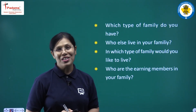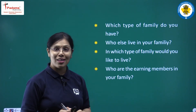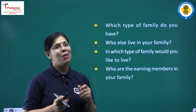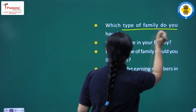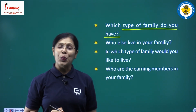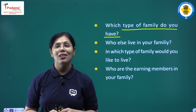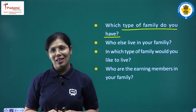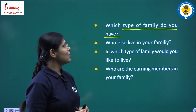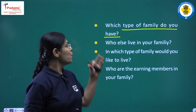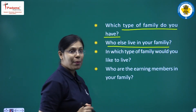There are some questions you have to answer on your own by observing your family and writing in your notebook. Question one: which type of family do you have — nuclear or joint? Observe how many members are in your family and who lives together with you. Question two: who else lives in your family? Name the members of your family besides yourself.